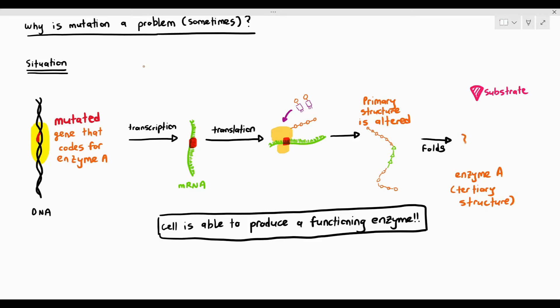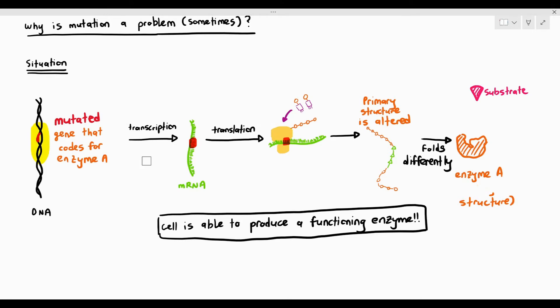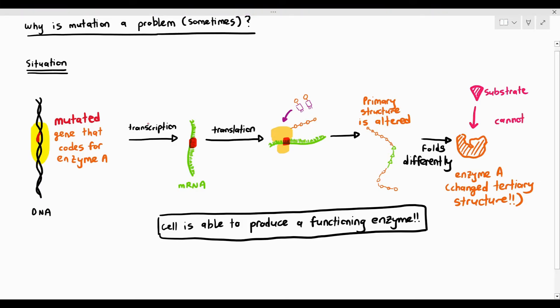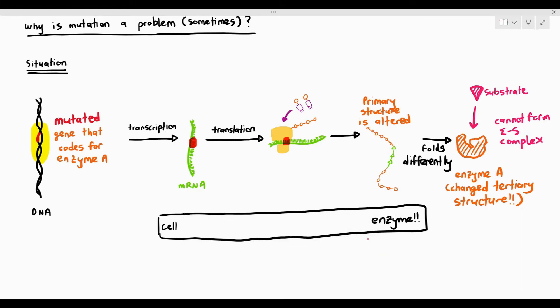Will this affect the protein structure? Yes, it will, because when it folds to form the tertiary structure, it folds slightly differently. Therefore, the tertiary structure of the enzyme has changed. The active site is no longer complementary to the substrate — it cannot form the ES complex — and therefore, due to mutation, the cell produces a non-functioning enzyme. This can be quite problematic, because if a mutated gene codes for a non-functioning enzyme, the cell will not be able to carry out its metabolic reactions, and that can be detrimental to the cell.